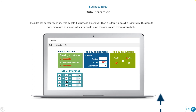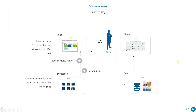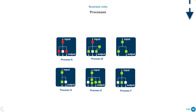These rules can be modified at any time by any user with permissions, making it possible to apply modifications to many processes at once without having to change each process individually. For example, we might change some instructions in a text rule, or modify algorithms, formulas, or assignments — such as a type of interest or tax. Once done, it will start affecting all the processes being performed.